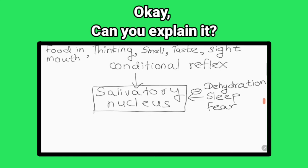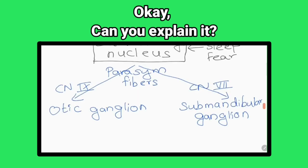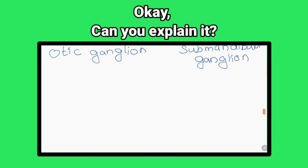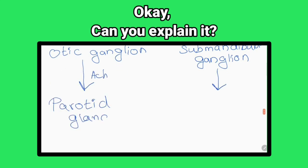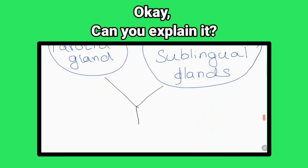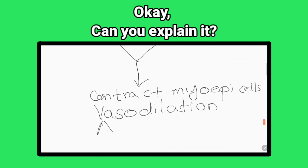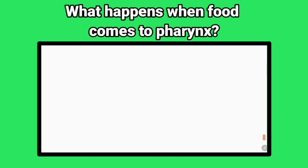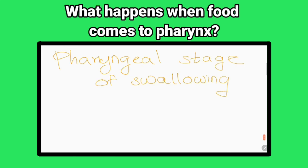Can you explain the mechanism of regulation? Achieving taste, chewing, conditioned reflexes, and nausea stimulate the salivatory nucleus in the medulla. Fibers pass through the facial nerve and glossopharyngeal nerve to the salivary glands, increasing salivary secretion by contracting the myoepithelial cells and dilating the vessels around the gland.